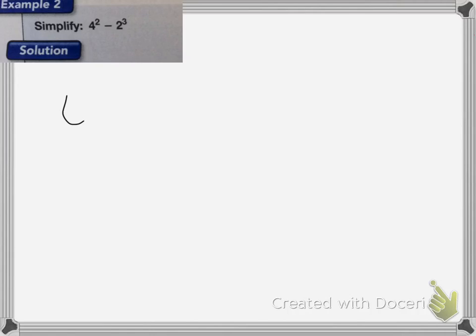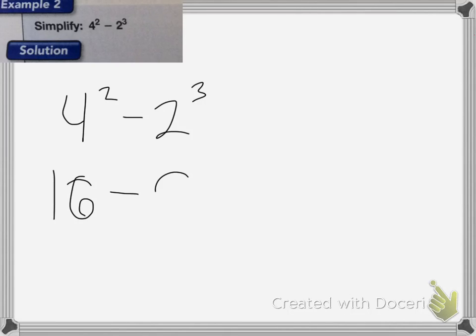Here it wants me to simplify 4 squared minus 2 to the 3rd power. You do your powers first: 4 squared is 16, and 2 to the 3rd power is 8. So 16 minus 8 is equal to 8.